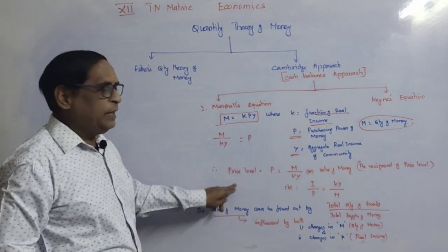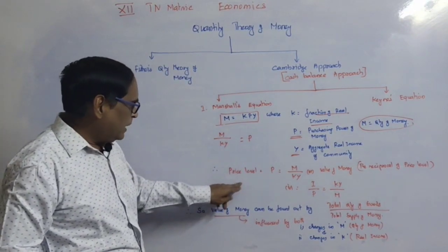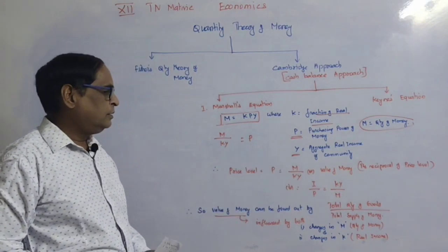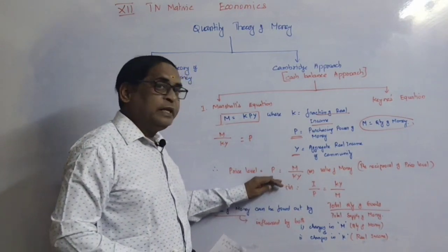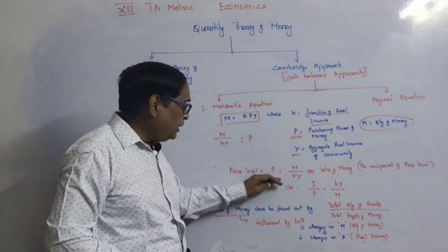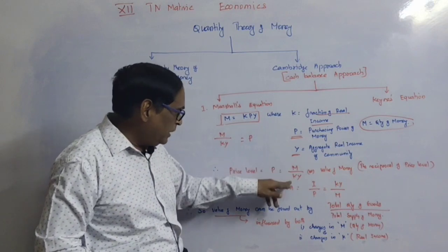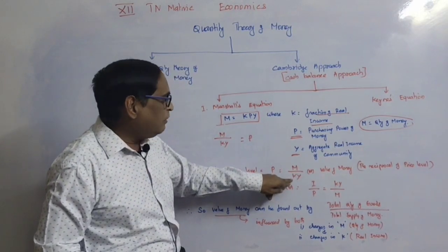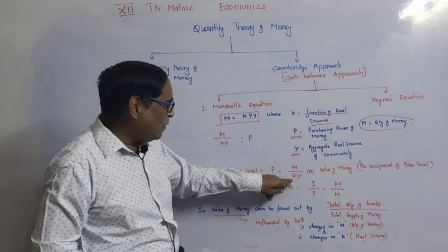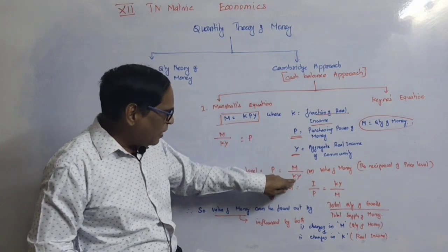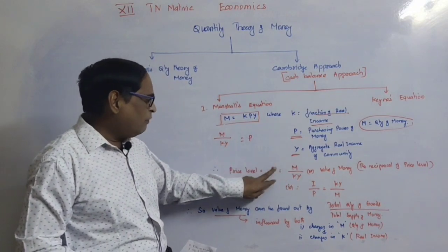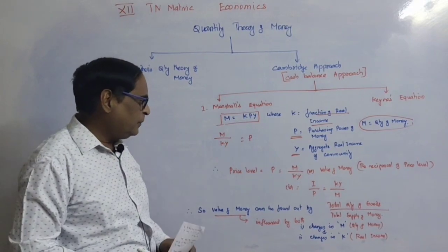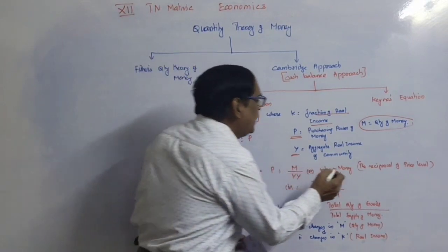Price level is equal to M divided by KY. That is, the quantity of money M is divided by KY, where K is the fraction of the real income. The price level determines the value of money.